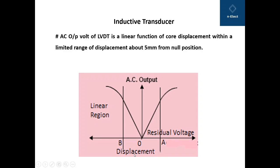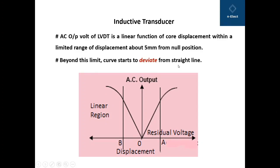The AC output voltage of LVDT, shown on the y-axis, is a linear function of core displacement, shown on the x-axis, within a limited range of about 5 mm from the null position — 5 mm to the right (point A) and 5 mm to the left (point B). The curve is very linear within this ±5 mm range, but beyond 5 mm it deviates from linearity.